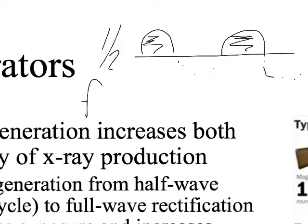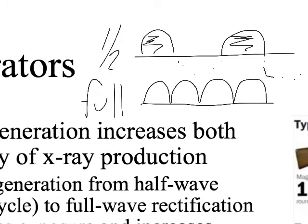Versus full-wave rectification — now we've got something more like the machine gun. We were able to flip the negative part of the wave up over the line, so we've increased the frequency of firing. We've increased the quantity of photons being produced and also the quality. Right now let's focus on just the quantity.